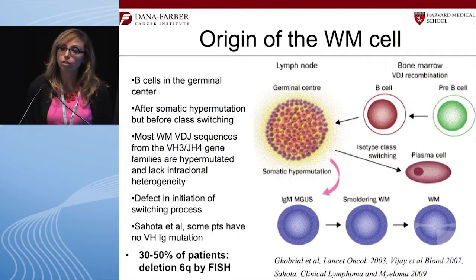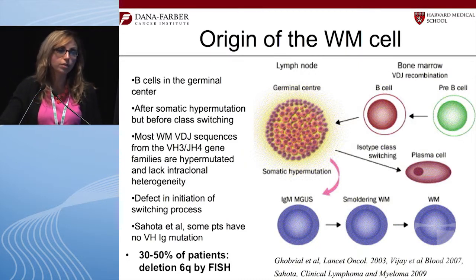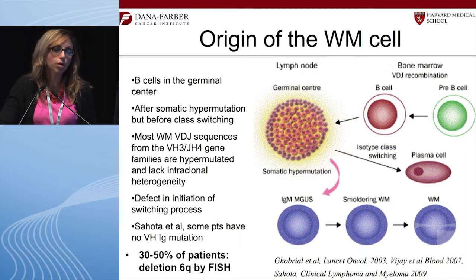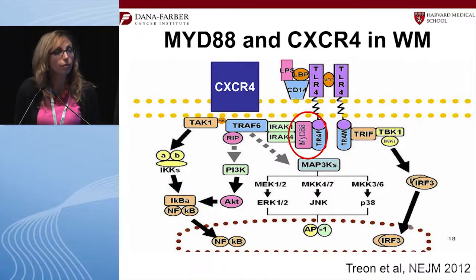Going back to the biology, what is special about Waldenström beyond being a low-grade lymphoma: during B-cell development and through the germinal center, the cells characterizing Waldenström are ones that have not undergone class switching — they are stuck at the IgM protein stage and have not differentiated into plasma cells. With cytogenetics and FISH, we find that 30 to 50 percent of patients have a 6q deletion, where BLIMP-1, a tumor suppressor, resides and may play a big role in pathogenesis.